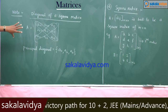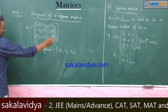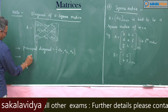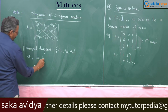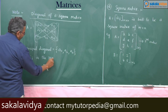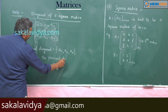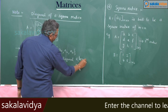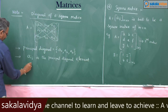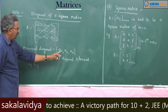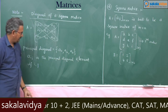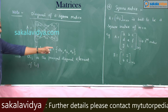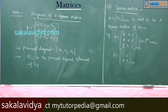In compact form, Aij is a principal diagonal element if i is equal to j. Let us check: A11, A22, A33 — that means if i is equal to j, then Aij is one of the elements of the principal diagonal.